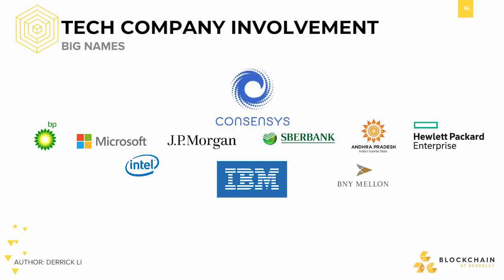Hyperledger currently focuses on tackling problems in supply chain, healthcare, and finance. Companies such as Walmart and Nestle have used Hyperledger to track food delivery in their supply chains. The Ethereum Enterprise Alliance is an organization within the Ethereum community hoping to extend Ethereum's influence on enterprise. It's a consortium of over 150 Fortune 500 companies, startups, institutions, and governments that provide a standard framework for companies trying to build enterprise blockchains using Ethereum as the base layer.